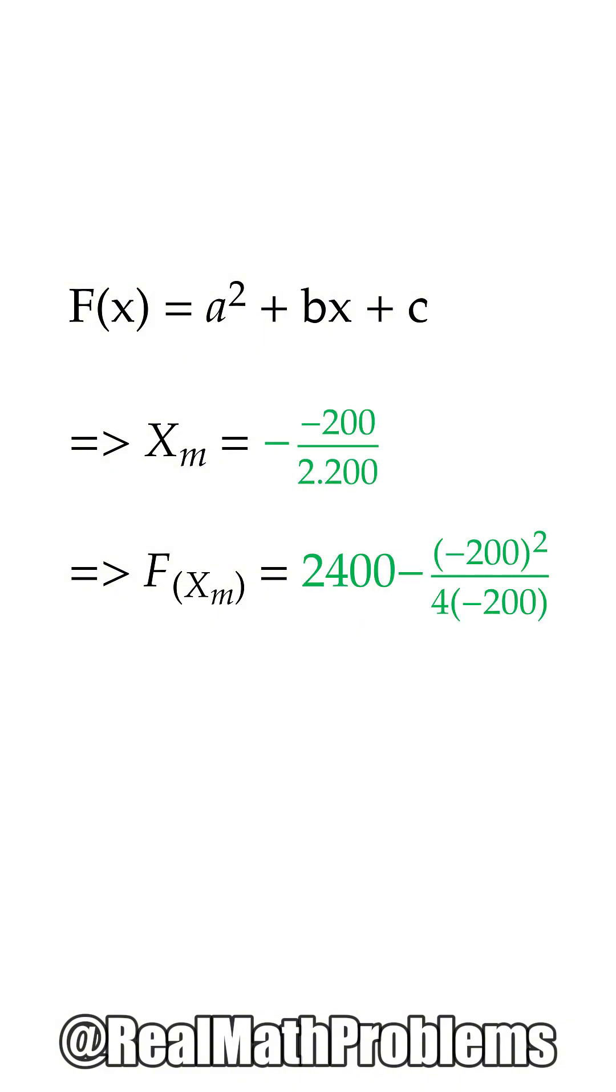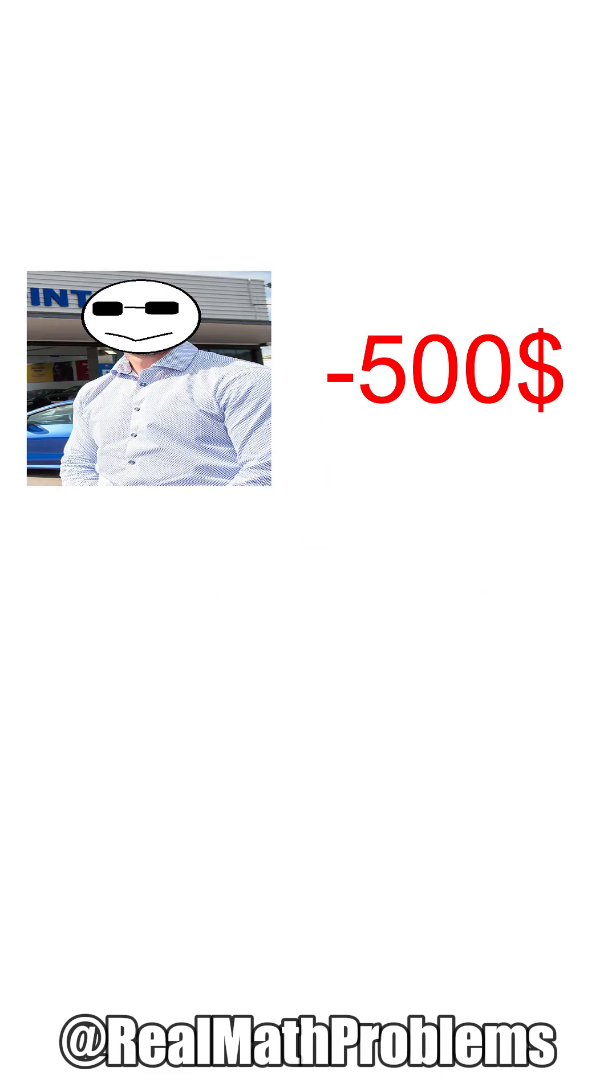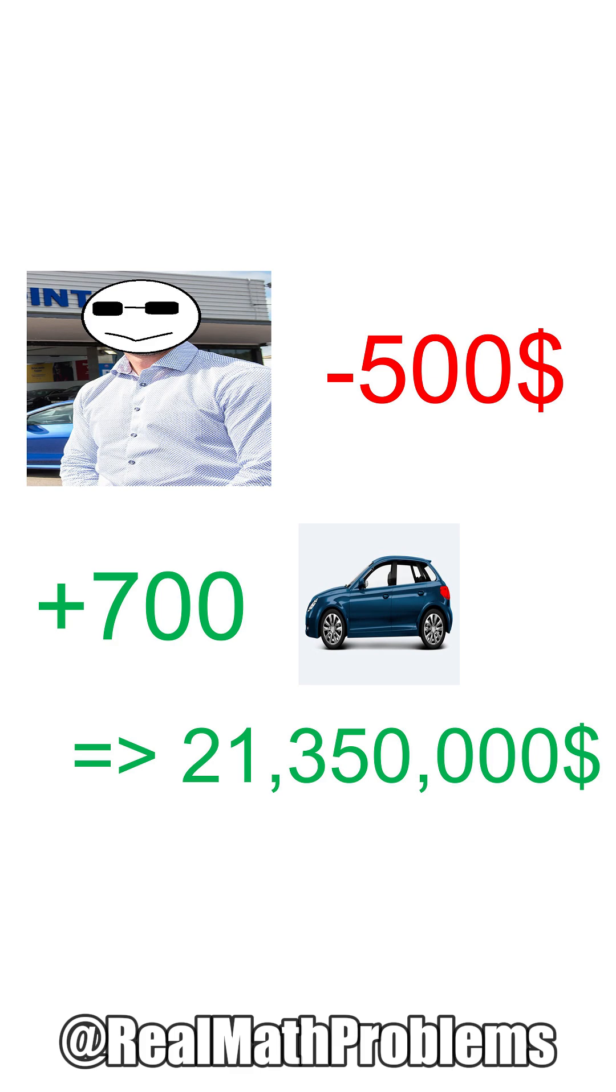Replace each value and Dave got an answer of 0.5 and 2450. That means Dave should reduce the price by $500, and he will have about 700 cars sold and revenue around $21,350,000, or $2,450,000 of profit.